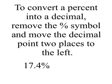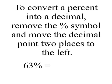Here's another example: 17.4%. We're going to move the decimal two places to the left and remove the percent symbol, and we get .174. Here's 63%. It has no decimal point, but we know where it belongs — it's after the 3 — so we'll put it there, move it 2 to the left, and we get .63.